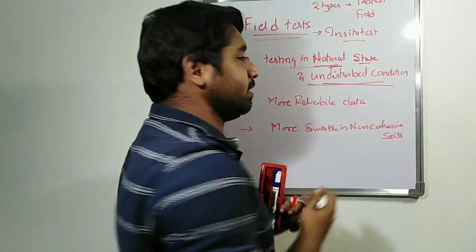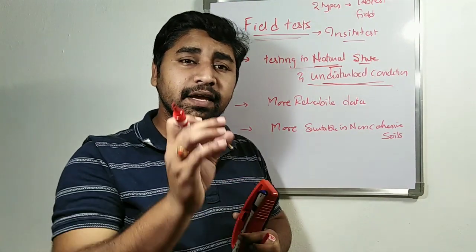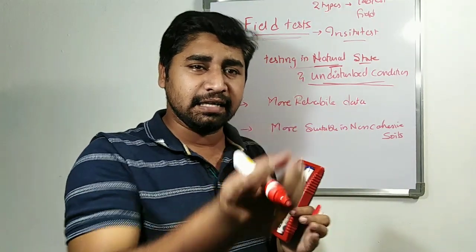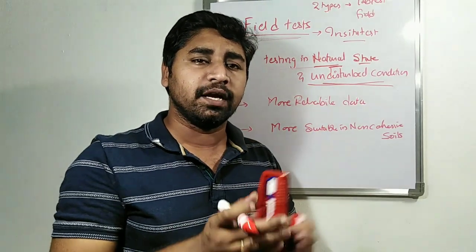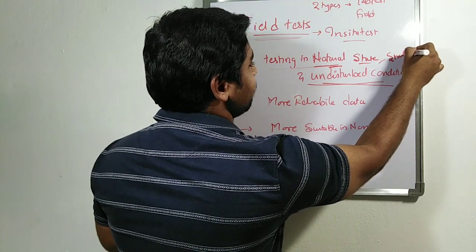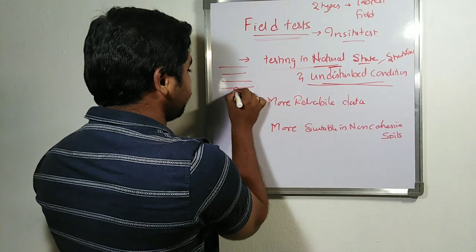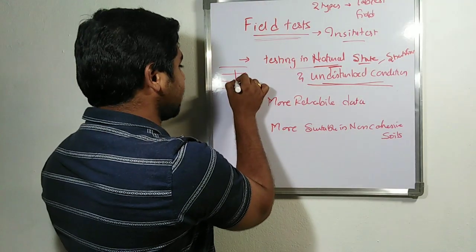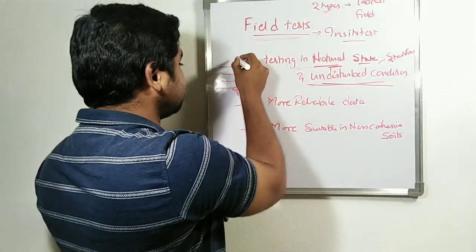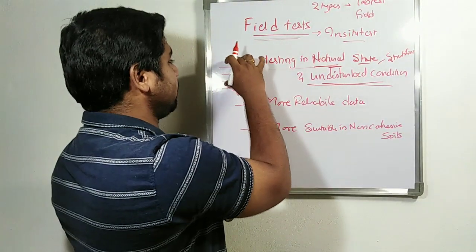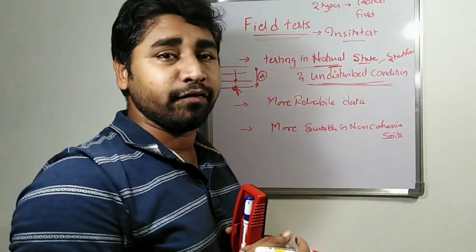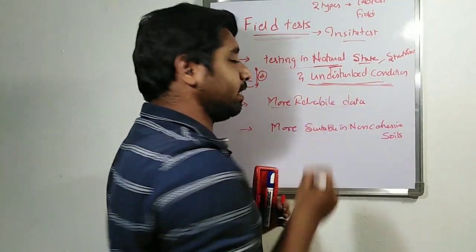Second advantage: undisturbed condition. If you extract a sample out of the soil it will be disturbed to some extent — even an 'undisturbed' sample has a minimum level of disturbance. Similarly, the load stratification effect — the load acting on different layers due to superimposed layers — will not be present when testing in the laboratory. In field testing, we test directly at the required depth with our apparatus, giving more reliable data.